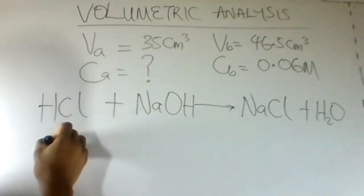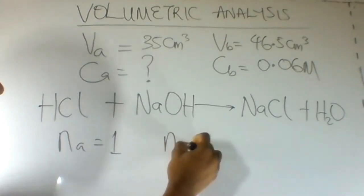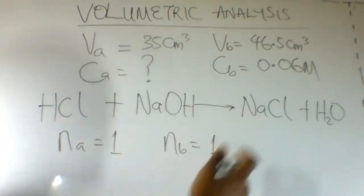The number of moles for the acid is one and the number of moles for the base is one because this is a balanced chemical equation.